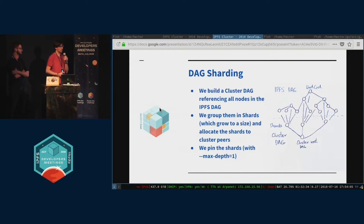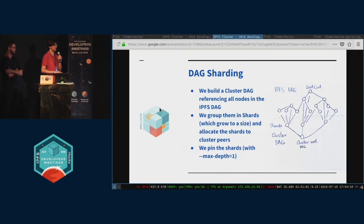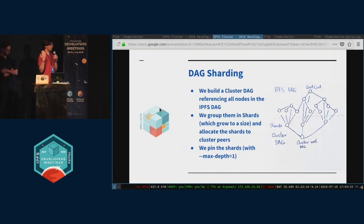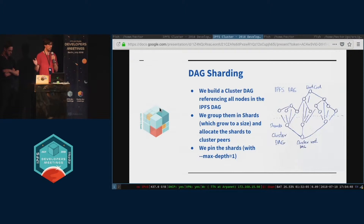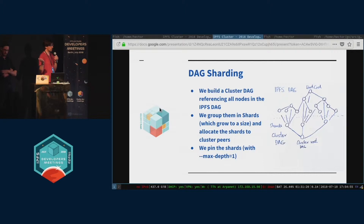We basically want to allow adding huge things and distributing them among a cluster of IPFS daemons. Initially we don't know how big the content is that we want to add. Normally you would pick this up from a URL or something, so you just start reading things — start reading an archive which is sitting somewhere and start adding it. As we add it we should be distributing it to your cluster of IPFS daemons. That means it is difficult in this mode to make assumptions about how big your DAG is and what is the best way to split it.